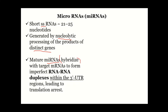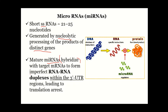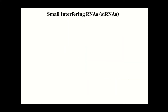Mature microRNAs hybridize to a target mRNA to form an imperfect hybrid or duplex. This duplex is formed within the three-prime untranslated region of the mRNA. These microRNAs bind there and form an imperfect duplex, which leads to arrest of translation. This means no protein is produced — it is a form of gene regulation, where if the body determines a protein is not needed, it can be regulated at that point.